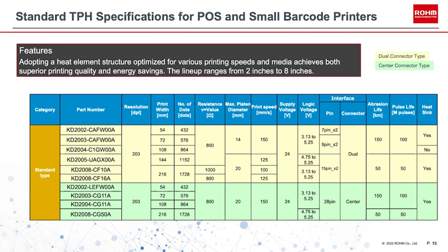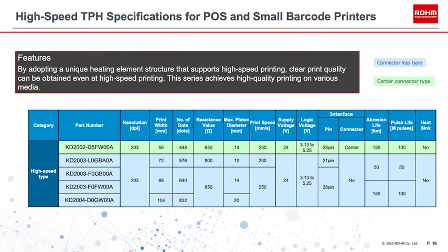The standard type emphasizes greater miniaturization and ease of use. Top rows in yellow indicate the dual connector type, while green highlights center connector type products. The high-speed type optimizes the resistance value to support high-speed printing on various media, with improved durability. The top product in green is the center connector type, while the four products in blue are connectorless type print heads.